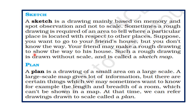Map, sketch, and plan — all three are drawings of the earth's surface on a flat sheet of paper, but there are differences. A map is a drawing of the earth or part of it on a flat surface using scale, with three components: scale, direction, and symbols. A sketch is a drawing mainly based on memory and spot observation and not to scale.